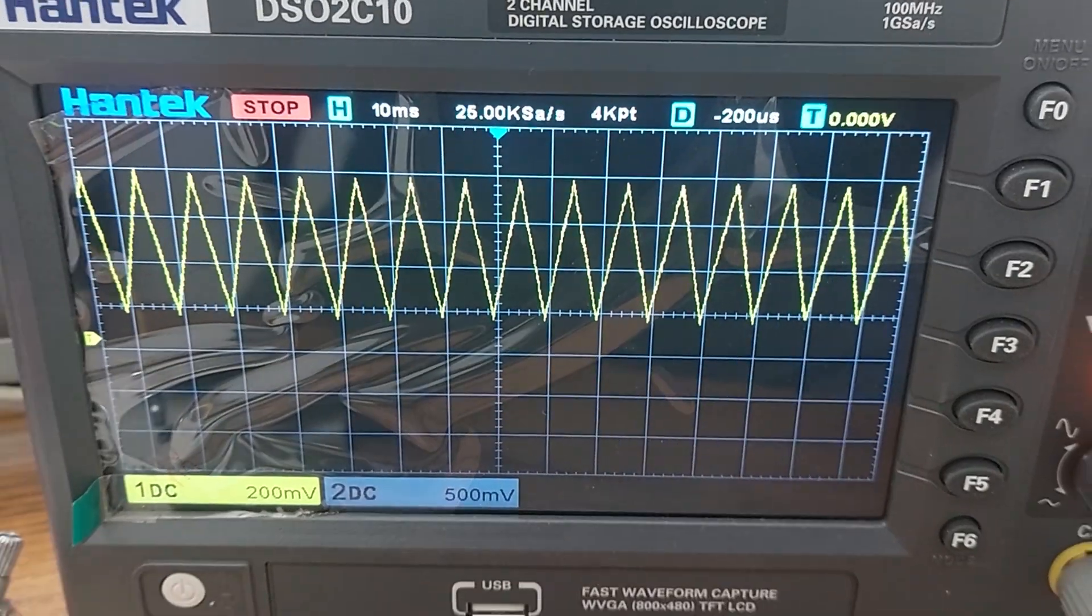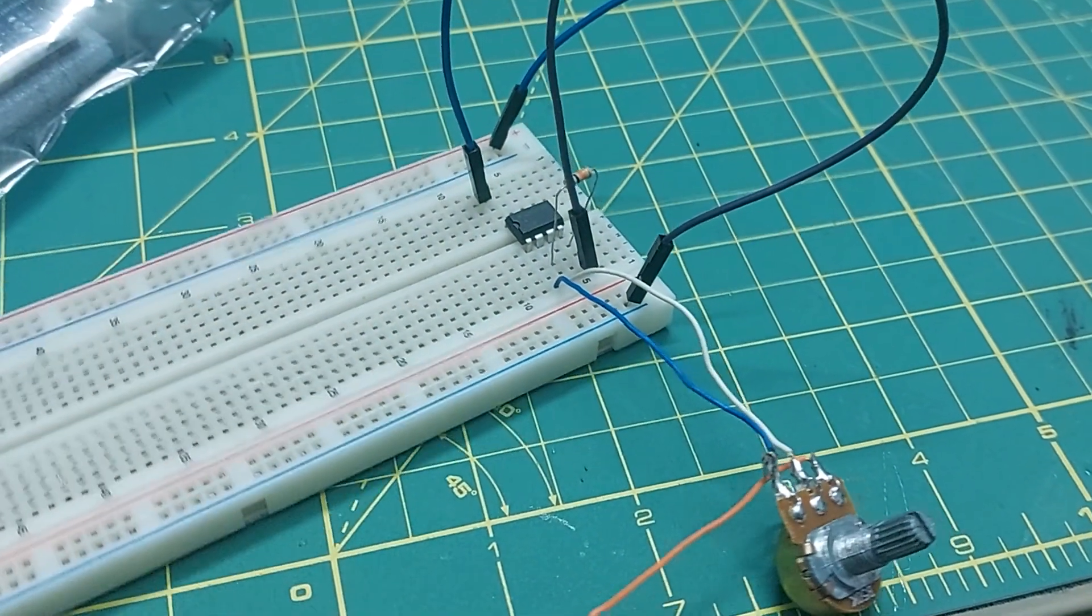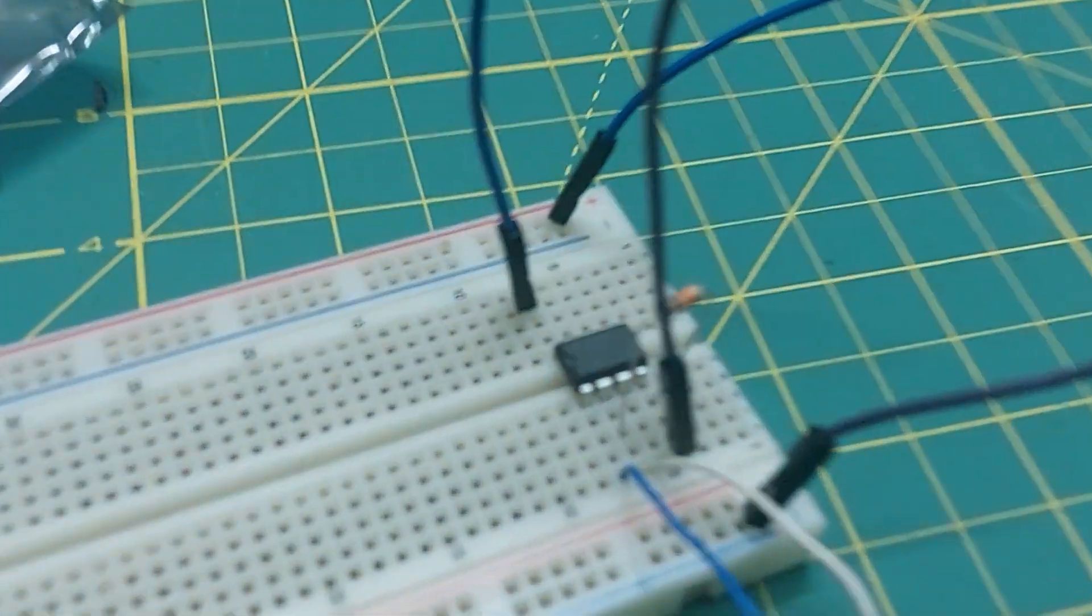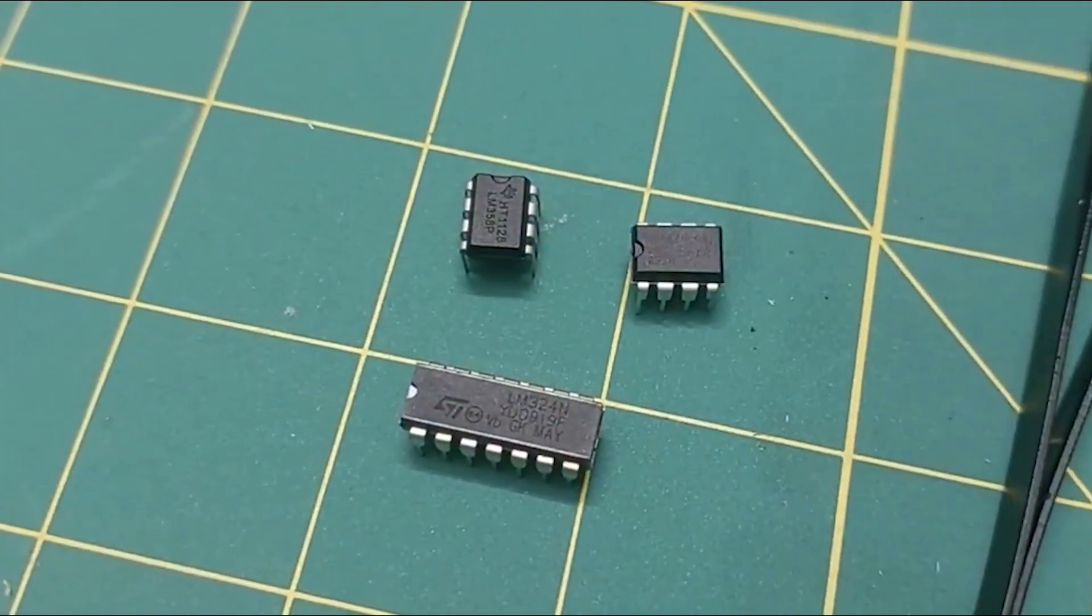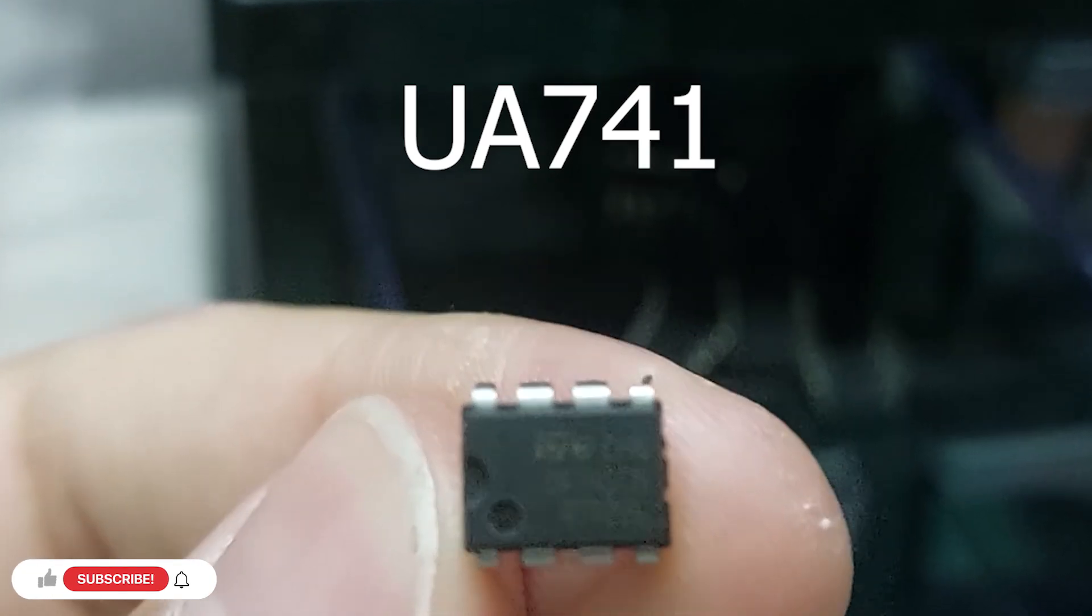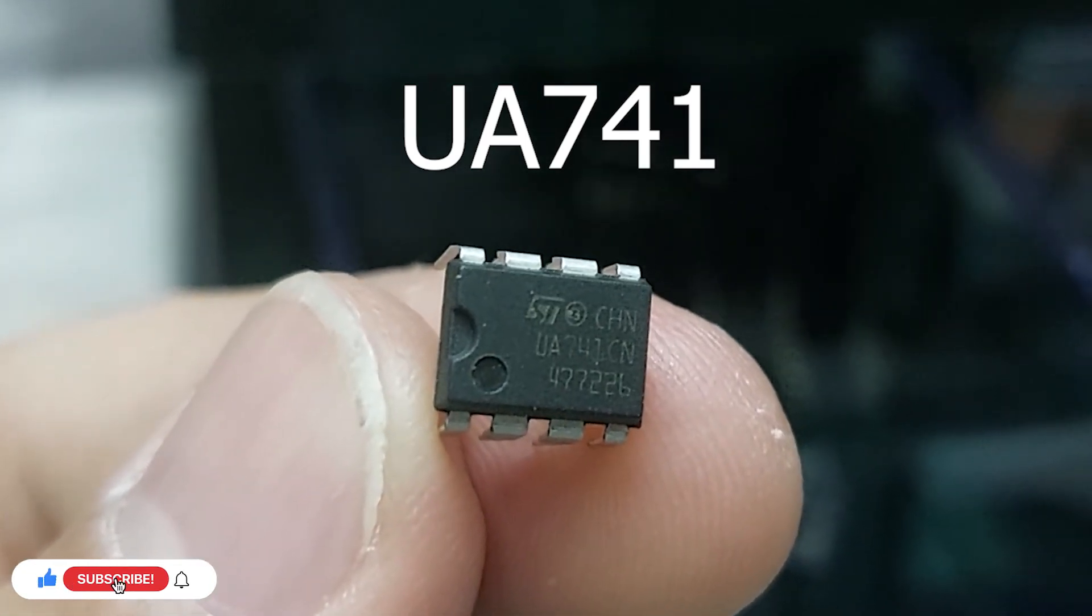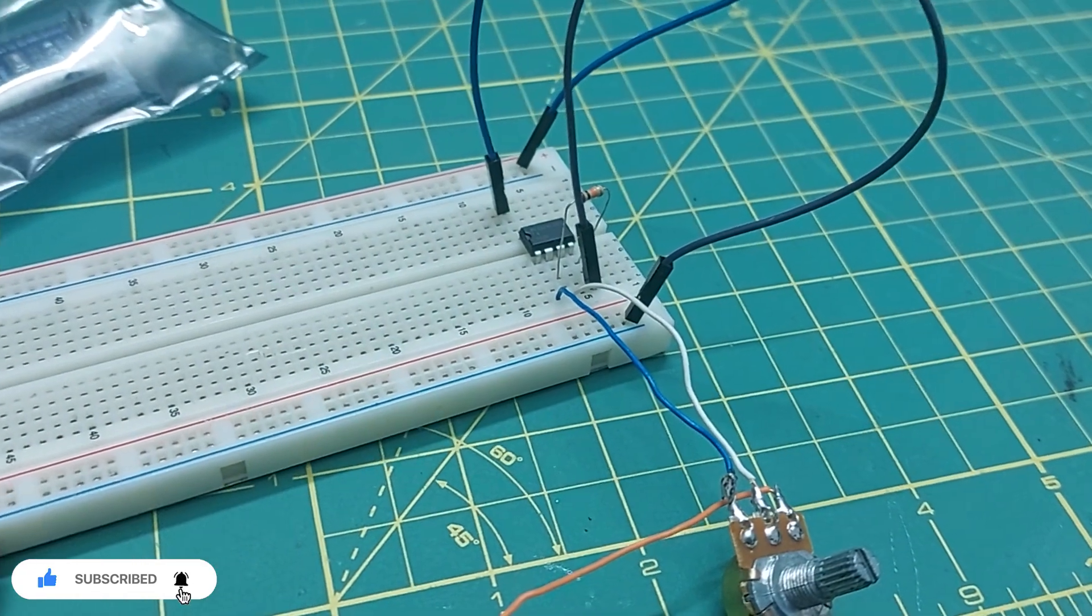So we need to amplify the signal. The best option here is to use operational amplifiers, or op-amps, since we can adjust their gain. But are classic op-amps like the UA741, the one you probably learn about at university, really suitable for this job?